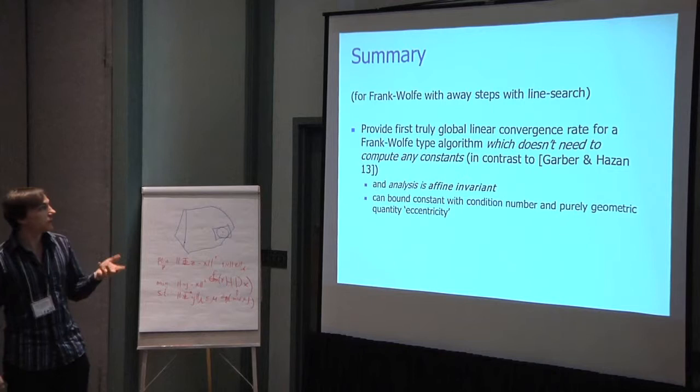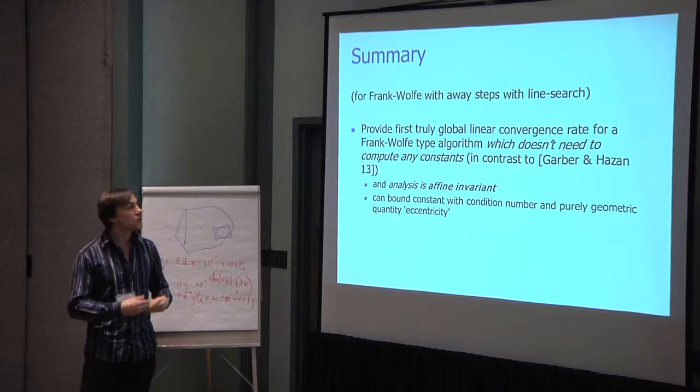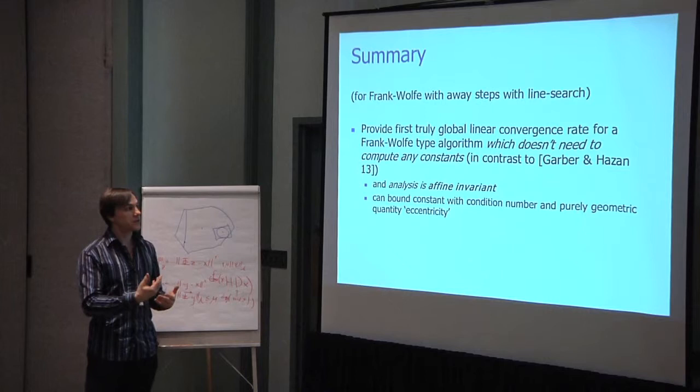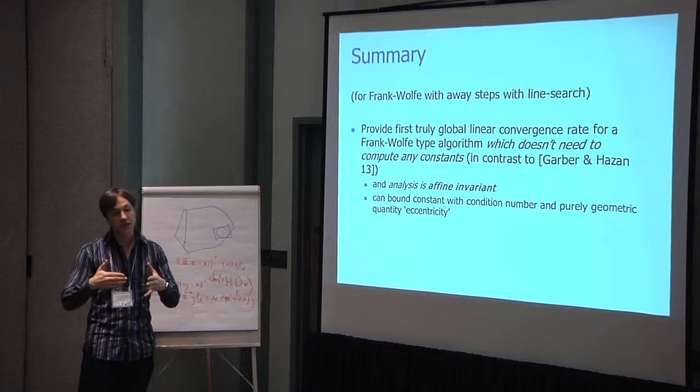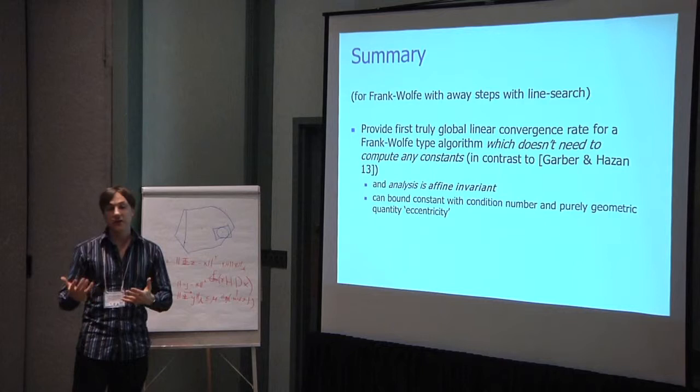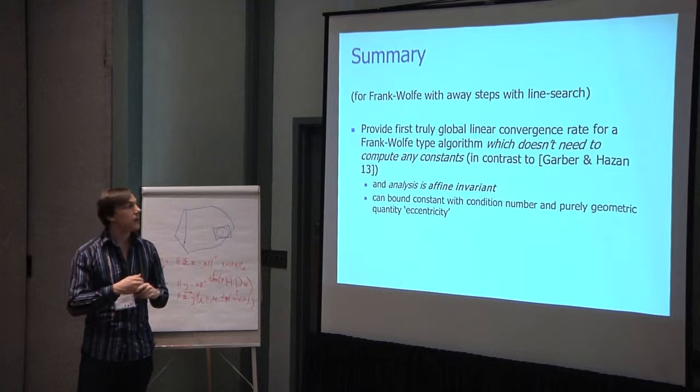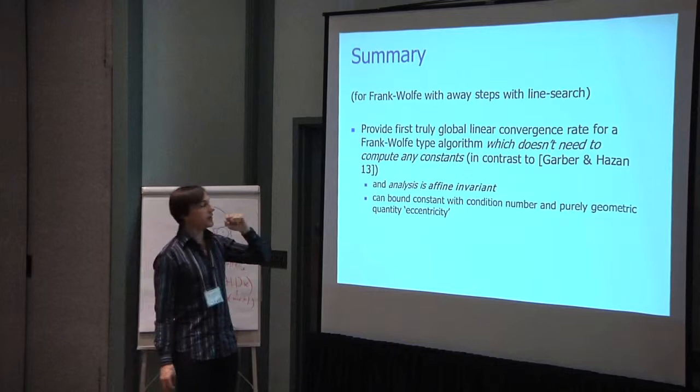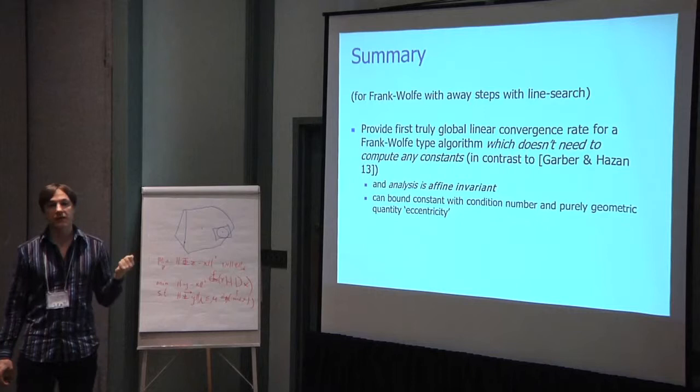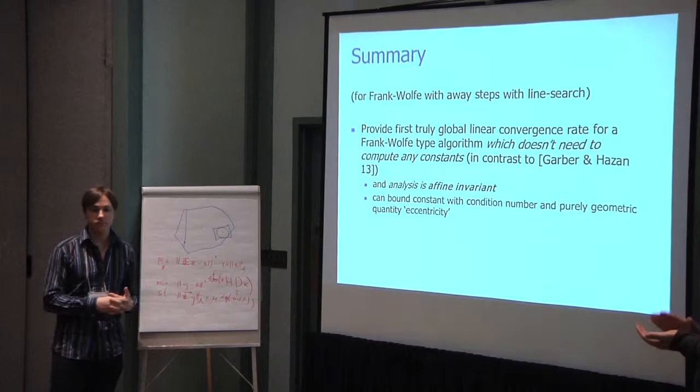So to summarize, we provide the first, we could call truly global linear convergence rate for a Frank-Wolfe type algorithm, which doesn't need to compute any constant. What do I mean by needs to compute any constant? Because there's this recent result by Garber and Hazan, 2013, where they have an interesting algorithm which reduces their coordinates multiple times until some criterion is satisfied, but to have this criterion, you need to compute a bunch of constants, which you only have in practice. This algorithm is just standard Frank-Wolfe with away step with line search, or you can minimize the quadratic upper bound, and then you will get this global linear convergence rate. The analysis is affine invariant. And we can bound this constant with a condition number and a purely geometric quantity called eccentricity. Thank you very much.